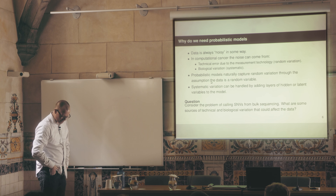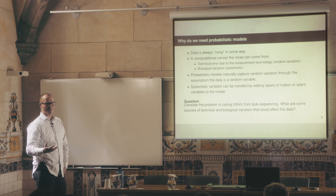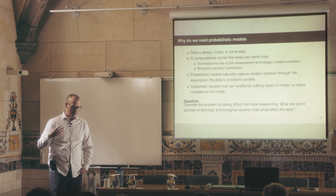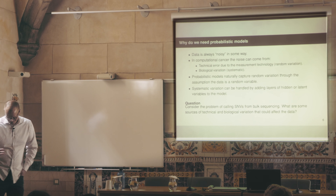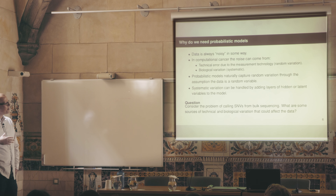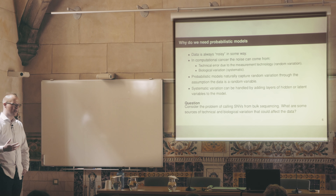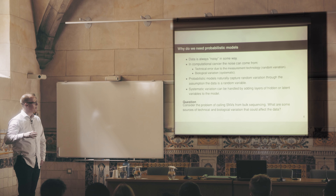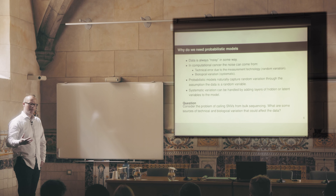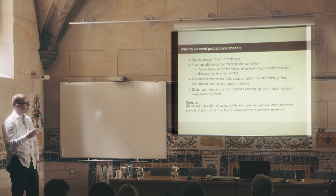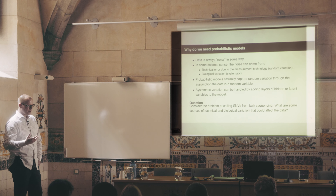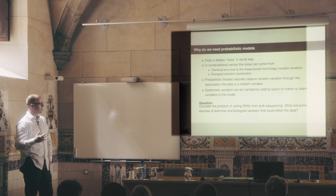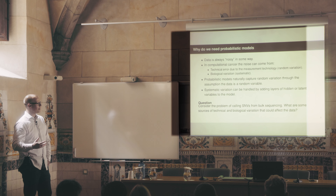Why are we interested in probabilistic models? The basic reason is that the data is noisy. When we think about cancer, there are a couple of sources of noise. Some of it is just technical error — if we're doing sequencing, there's going to be sequence error, stochastic coverage. Some of it's biological variation. Probabilistic models are very good at handling both of these. We can handle random variation by assuming the data is coming from a distribution, and handle systematic variation by introducing hidden or latent variables into the model.